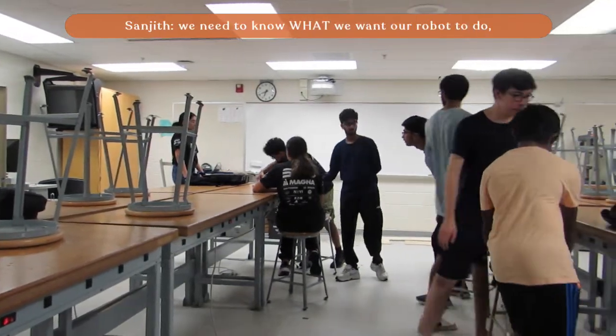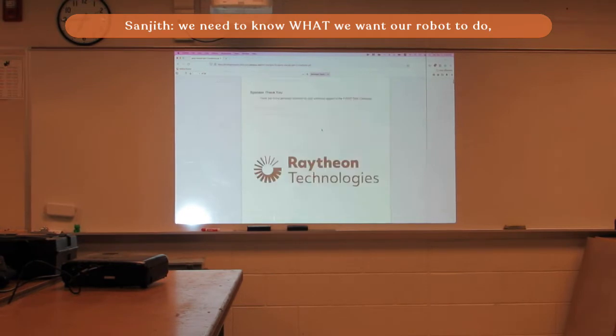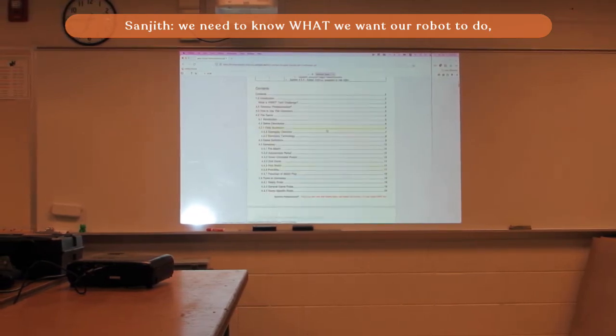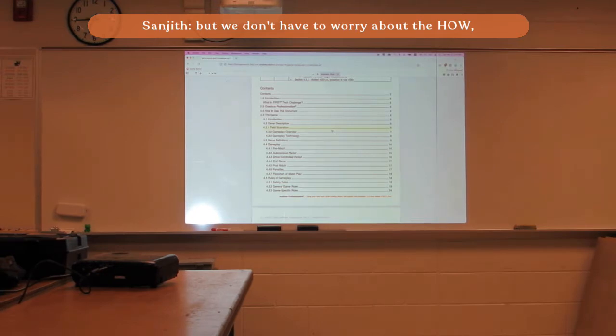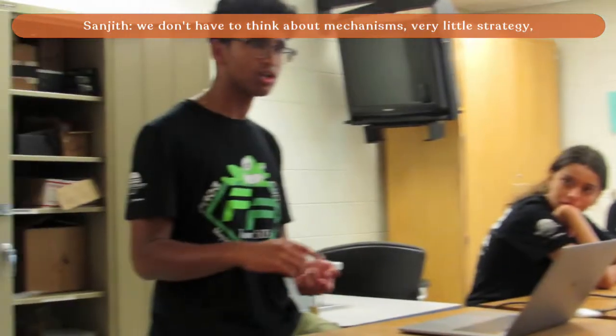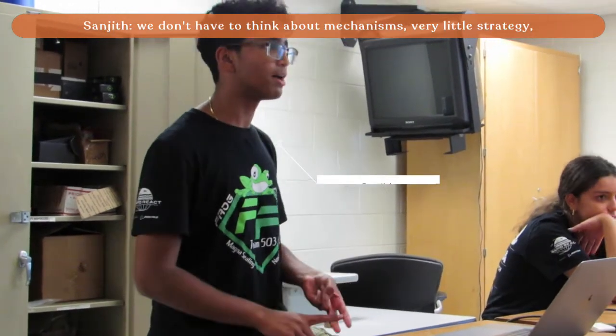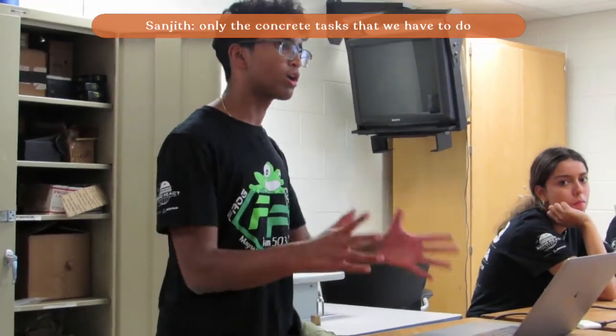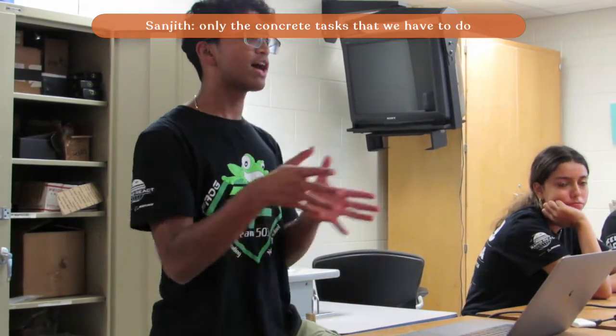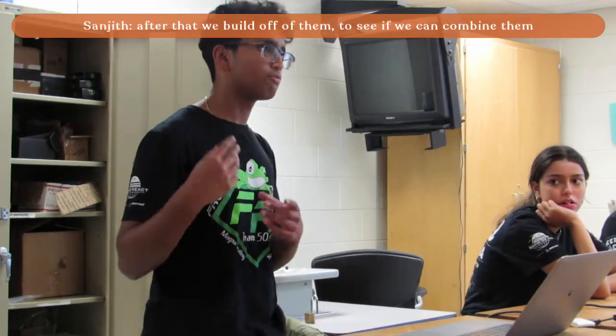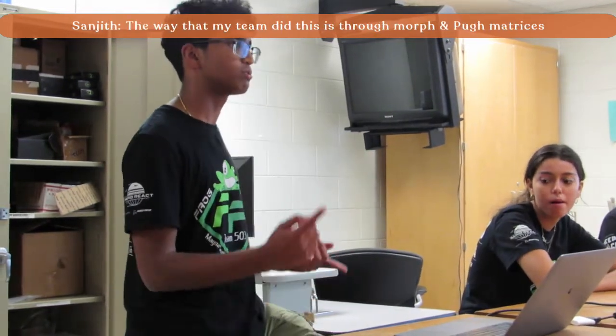We need to come up with a couple of things. First, we need to know what we want our robot to do, then figure out everything we want our robot to be able to do, but we don't have to worry about the how in any way. We don't have to think about mechanisms or strategy, just the concrete goal tasks that we have to do. After that, we build off of those tasks and see how we can combine them using certain mechanisms.